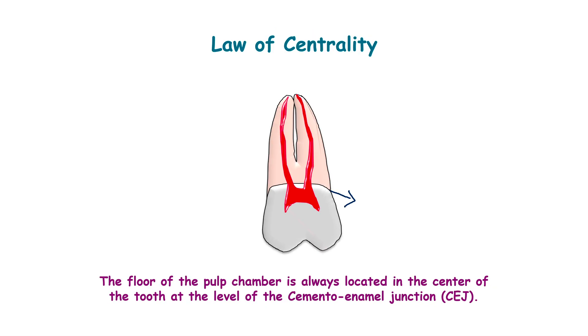This is the cemento-enamel junction, known as the CEJ. According to the law of centrality, the floor of the pulp chamber is always located in the center of the tooth at the level of the cemento-enamel junction.